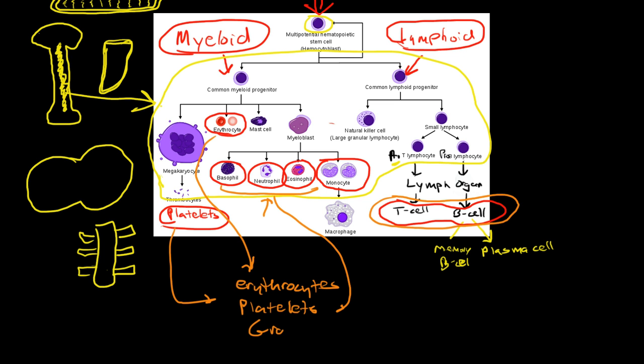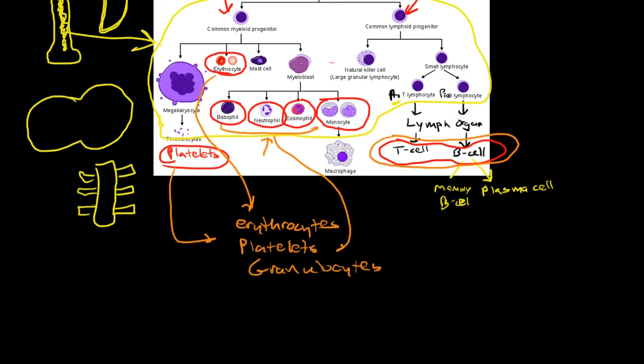and they're called granulocytes because under the microscope they have granules that stain. And these would be neutrophils, basophils, and eosinophils.